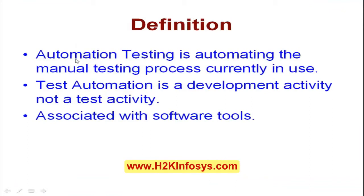Here is the definition of automation testing. Automation testing is automating the manual testing process currently in use. Whatever we do as part of manual testing, we will try to automate it. For example, if I manually enter a username and password, we will try to automate those steps. That particular process is called automation testing.